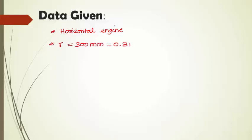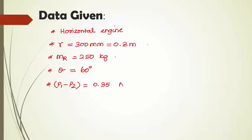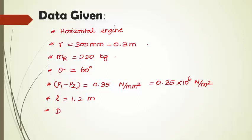The considered engine is a horizontal engine. The crank radius R is given as 300 mm, that is 0.3 m. Mass of the reciprocating parts MR is given as 250 kg. Crank angle theta is given as 60 degrees, measured from the inner dead center. The difference between the driving and back pressure P1 minus P2 is given as 0.35 × 10⁶ N/m². Length of the connecting rod L is given as 1.2 m. The cylinder diameter D is given as 0.5 m, and the engine speed is given as 250 rpm.